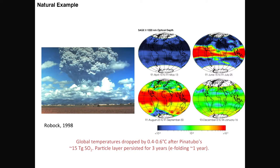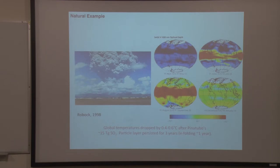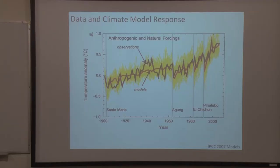These are the Pinatubo particles spreading out — erupting in the Philippines, very rapidly making it around the planet in the stratosphere, then slowly spreading poleward over several months, creating a global effect. We can see this changed the temperature of the planet. The observations are in black, model results in red. The last three major volcanic eruptions — Pinatubo, El Chichón, and Agung — all put material into the stratosphere, that material reflected sunlight, dropped the temperature, the particles fell out, and we returned to normal temperature, all superimposed on the rising trend of global warming.